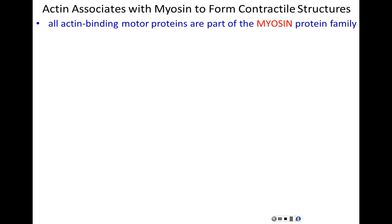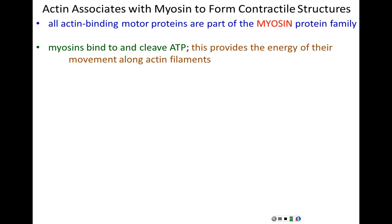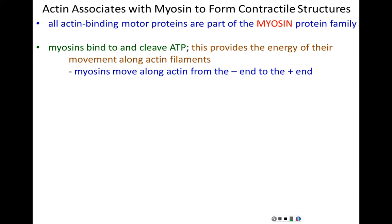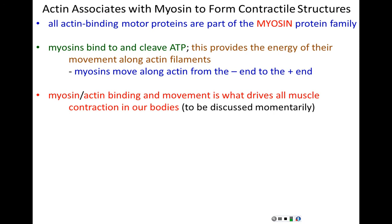Let's begin now to wrap the lecture up by highlighting how actin and myosin associate to form structures that can contract. If you are an actin-binding motor protein, you are part of the myosin protein family — there are no other motor proteins that bind to actin other than myosin proteins. All myosin proteins bind to ATP and cleave ATP, and it is this binding and cleaving of ATP that provides the energy needed for myosin movement along actin cables.